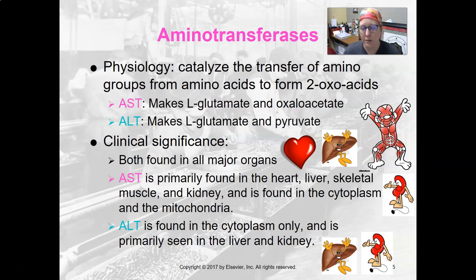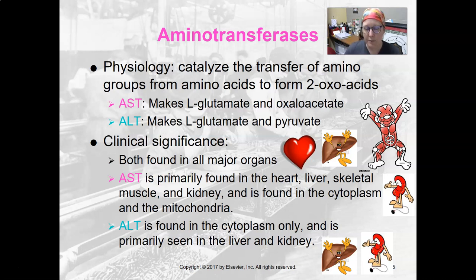AST is in the heart, liver, skeletal muscle, and kidney. It's found in the cytoplasm and in the mitochondria of those cells — the heart cell, the liver cell, the skeletal muscle cell, and the kidney cell. But ALT is in the cytoplasm only, not in the mitochondria. So the cell would have to be ruptured for both of those to be released, but AST also would indicate damage to the mitochondria.